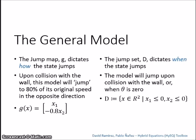Upon collision with the wall, the model will now jump to 80% of its original speed in the opposite direction. This jump will occur as dictated by the jump set when x1 or theta is less than or equal to zero and x2 or theta dot is less than or equal to zero.